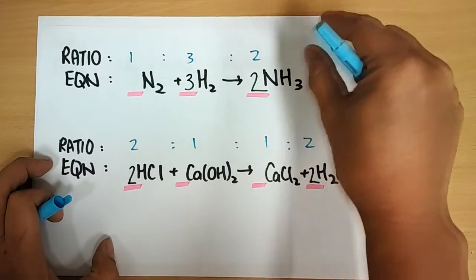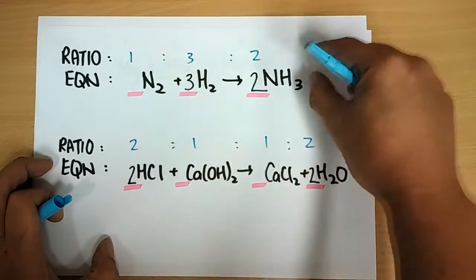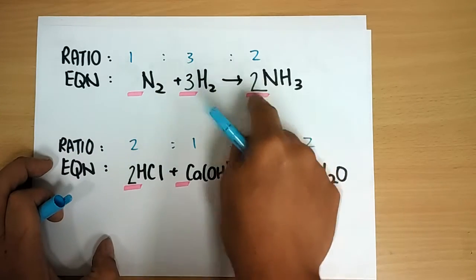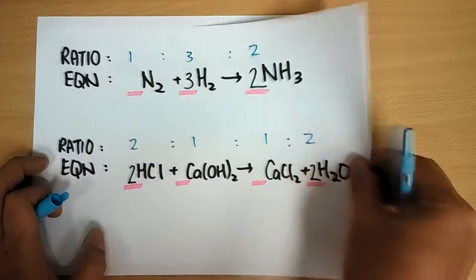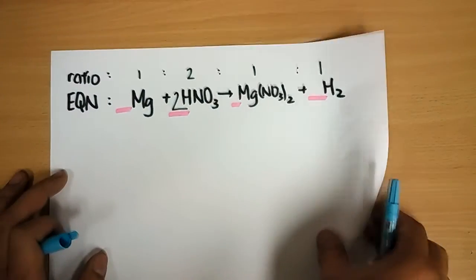This is the universal ratio for this particular equation. Each equation will have its own ratio. So let's look at this.